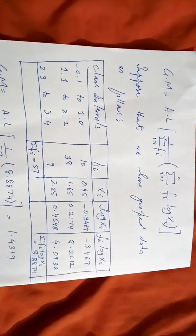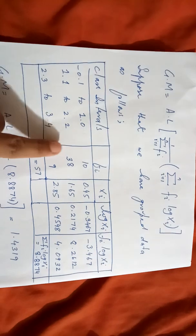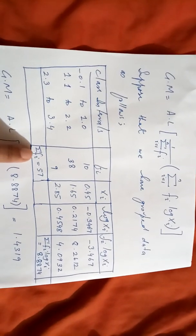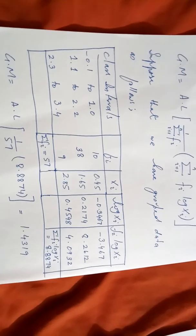And as you could see above in the formula, we need this summation fi. So I have added all the frequencies 10, 38, and 9, and the sum comes out to be 57.